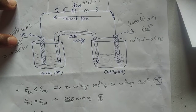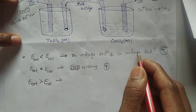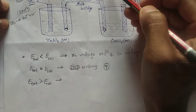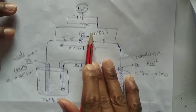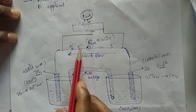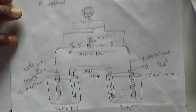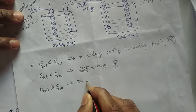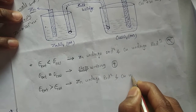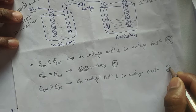If the external potential is greater than the cell potential, the cell reactions get reversed. Even though zinc has a tendency to undergo oxidation, when the external potential is greater than the cell potential, the electron flow direction reverses. Therefore, zinc undergoes reduction and copper undergoes oxidation — the cell reaction is completely reversed in this case.